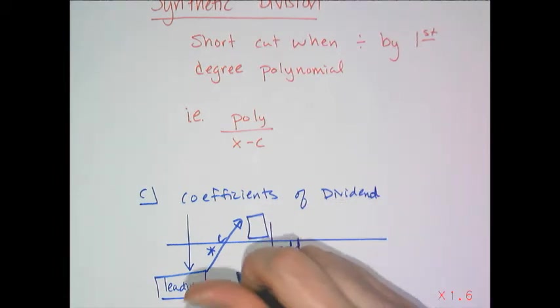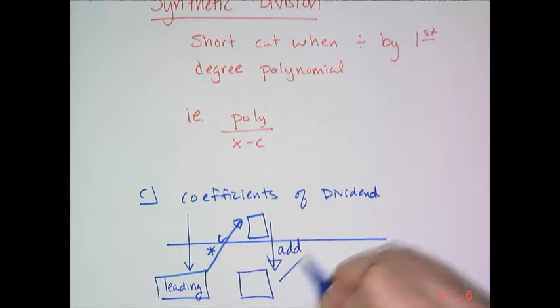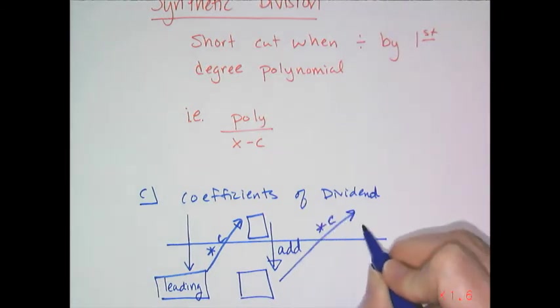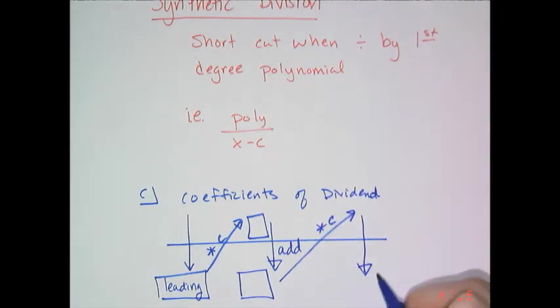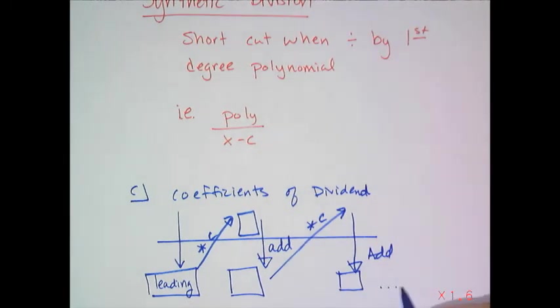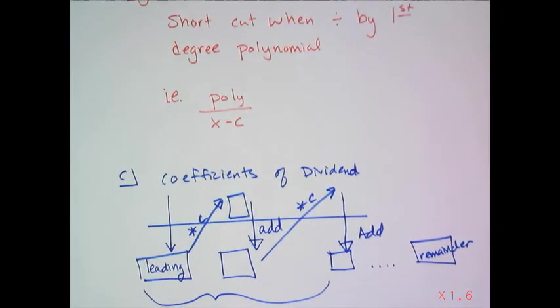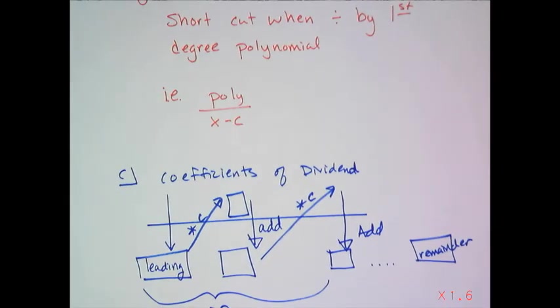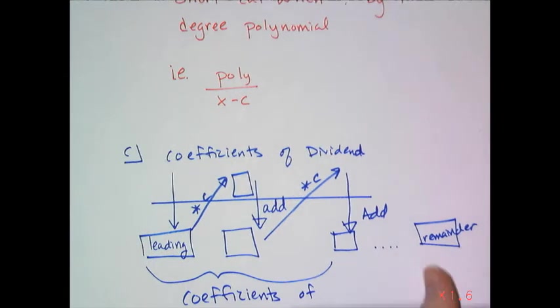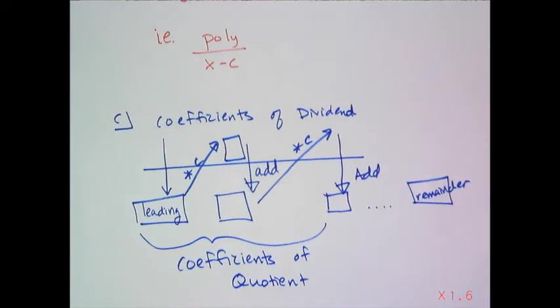And then you get your next coefficient. Then you repeat, multiply by c, add going down, and you get the next term. The very last thing you get is going to be the remainder. And then these numbers here are going to be the coefficients of your quotient.